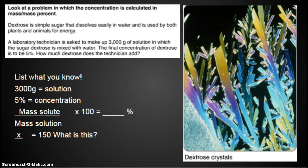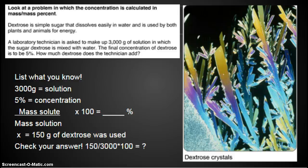So these two 3,000s are going to cancel, and we're going to take 3,000 times 0.05. What do you get? X equals 150. That's great, but what is that? 150 what? It's 150 grams of dextrose was used. And then you can check your answer.